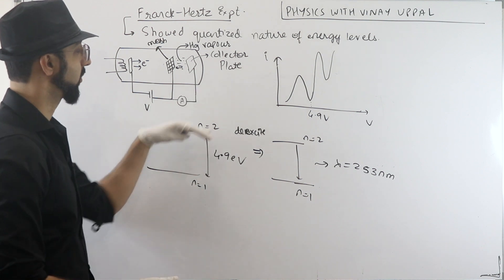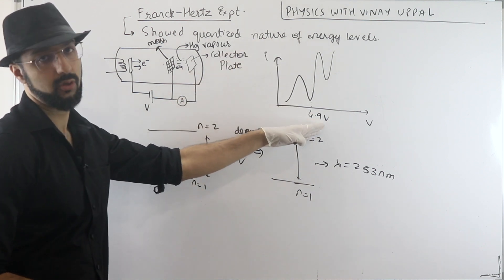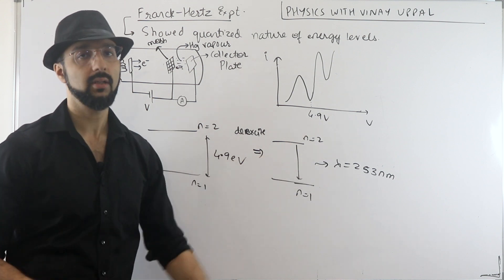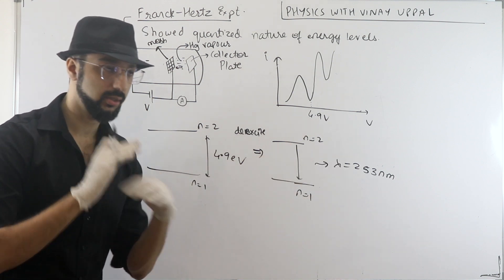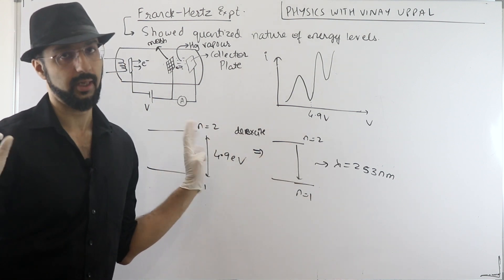All right, so this question will be factual based on the mercury level. When will the current drop? At 4.9 volts. And which photon wavelength will be emitted? 253 nanometers. Just factual based on the mercury level. All right, thank you.